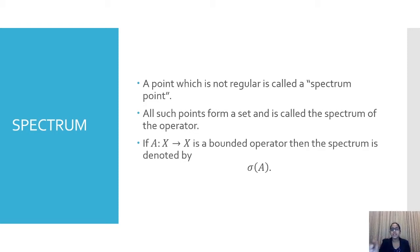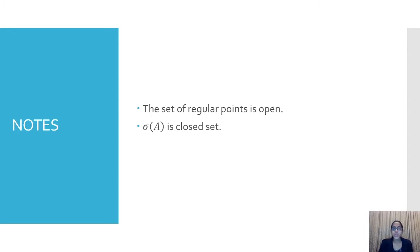The set of all spectrum points forms the spectrum of the operator, denoted by σ(A), where A is the bounded operator. There are two notes: first, the set of regular points is open; second, σ(A) is a closed set. The second follows from the first because σ(A) is the complement of the set of regular points, and the complement of an open set is closed.